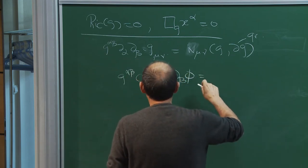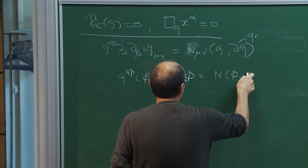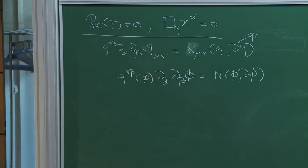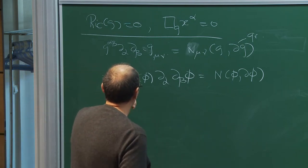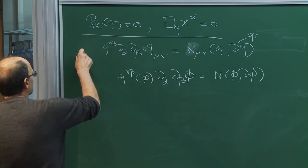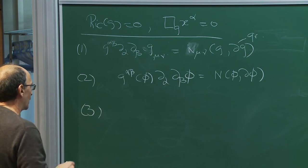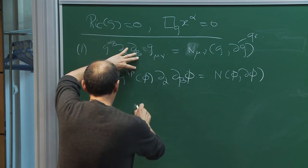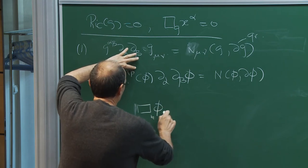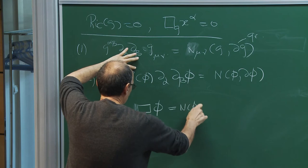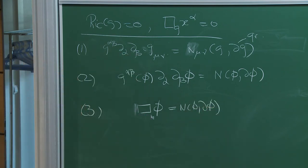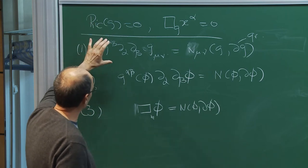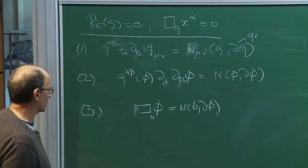Simplifying further to Minkowski metric: Box phi equals N(phi, partial phi). This is a reasonable model problem. The analogy is: phi equals zero corresponds to the Minkowski metric, and I want to perturb phi equals zero. I prescribe at t equals zero: phi equals epsilon*f(x) and partial_t phi equals epsilon*g(x), for smooth compactly supported f and g. For small epsilon, I want to show global existence and decay back to phi equals zero.